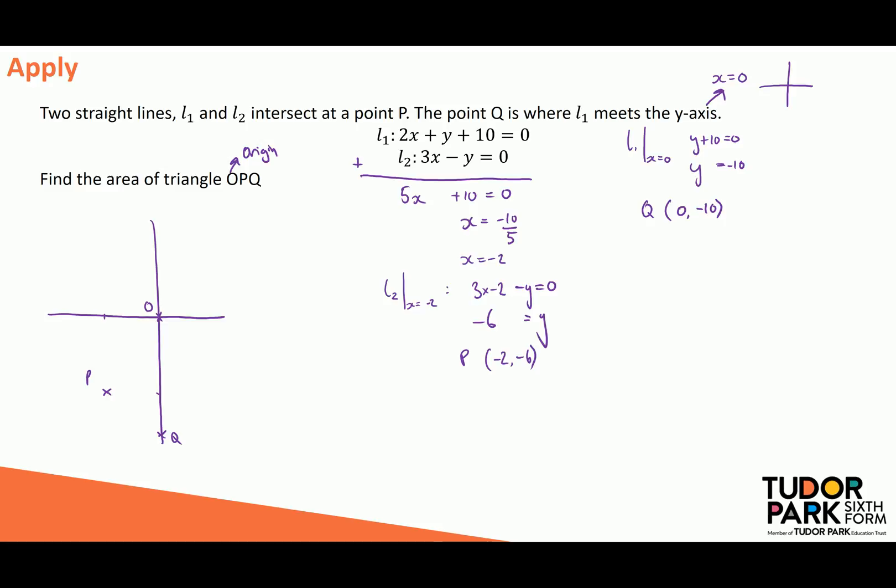Well, I can actually draw on the lines L1. So L1 is the line that goes through P and Q, so it looks something like this. And L2 is the line that goes through P and the origin, so it looks something like that. I want to find the area of the triangle that's created just in here.